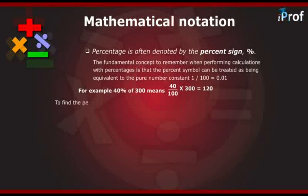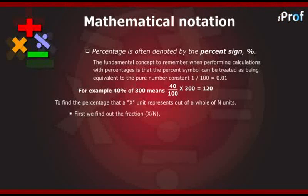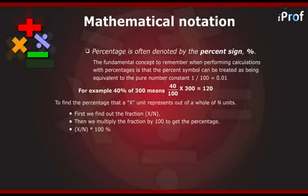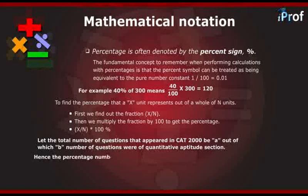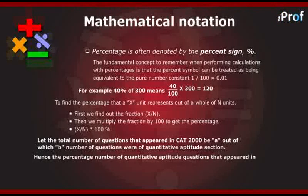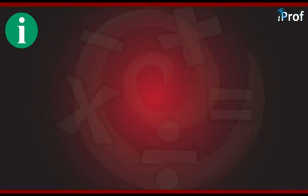To find the percentage that x units represent out of a whole of n units, first we find out the fraction x by n. Then we multiply the fraction by 100 to get the percentage, that is, x by n into 100%. Let the total number of questions that appeared in CAT 2000 be A, out of which B number of questions were of the quantitative aptitude section. Hence, the percentage of quantitative aptitude questions is equal to B by A into 100%. We also know that A percent of B is equal to AB by 100.